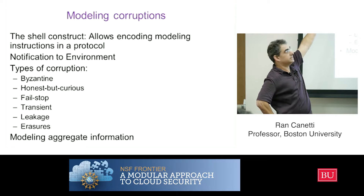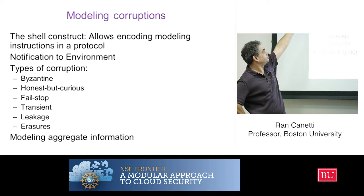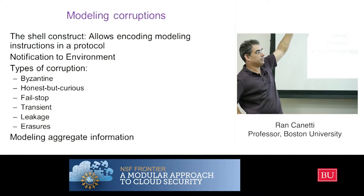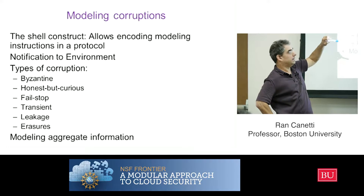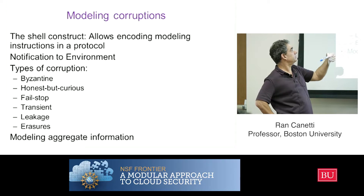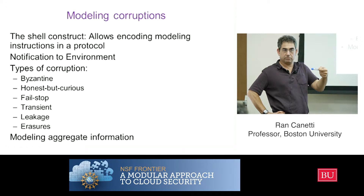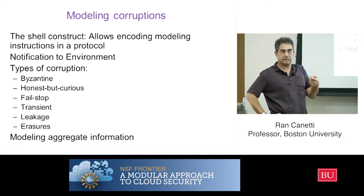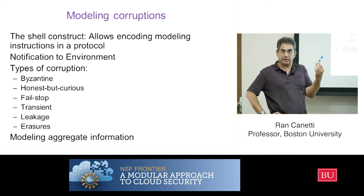So I'll call it a shell, and we need to do some simple things there. This shell is going to handle the corruptions. If I want to model Byzantine corruption, which is standard corruption, then whenever the shell gets a message from the adversary saying 'please corrupt yourself,' the shell says okay. The first thing the shell has to do is send a message to the environment that it's been corrupted.